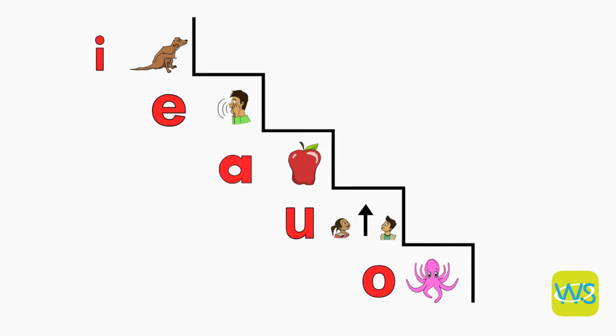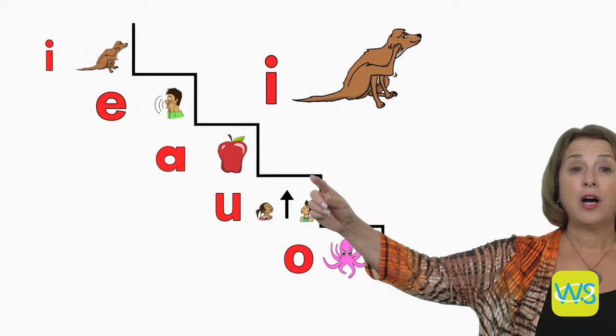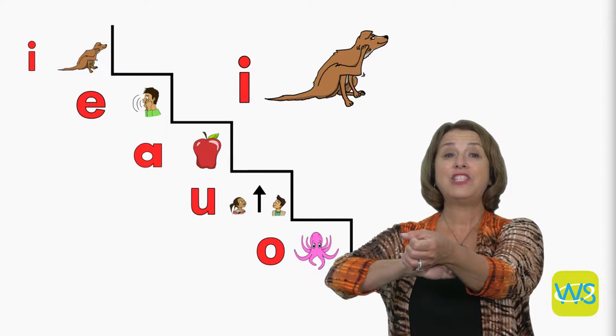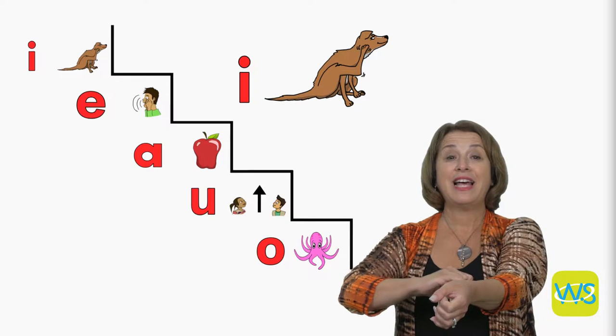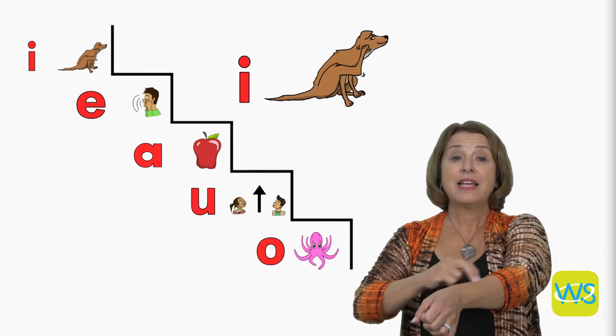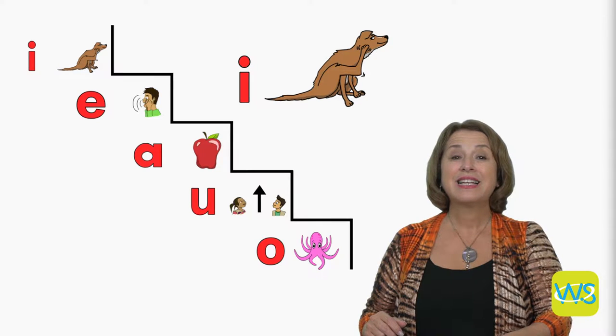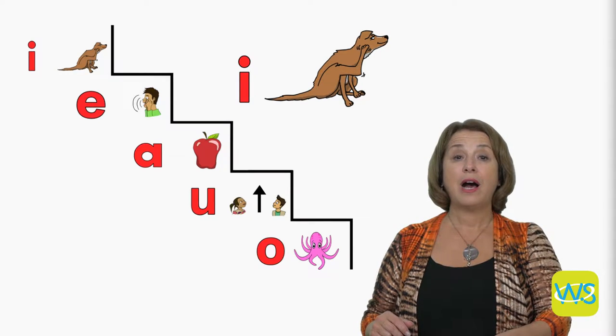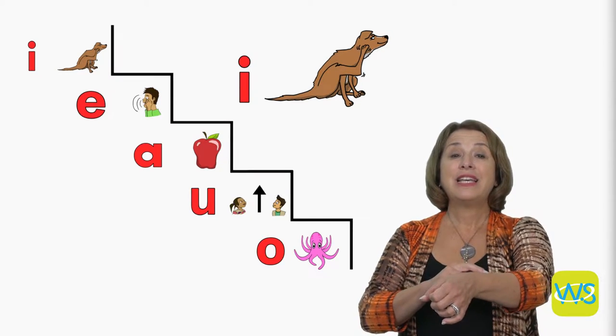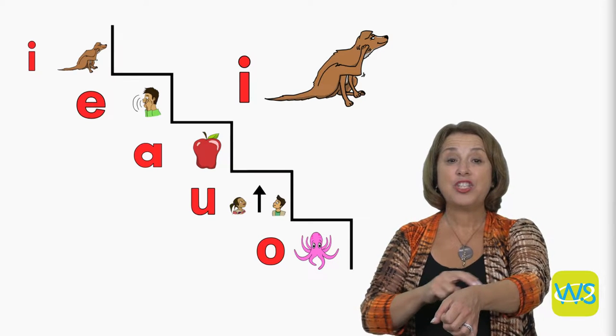Let's start at the top of the staircase with the letter I. Next to the letter I is a dog. The dog is itching because the letter I says the sound IH. We pronounce the letter I as IH, as in itching.